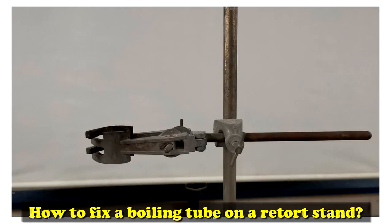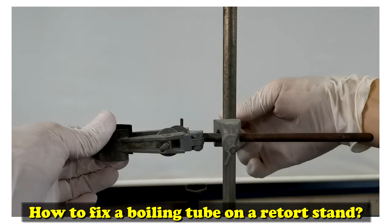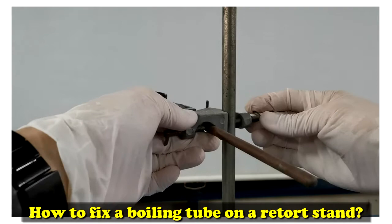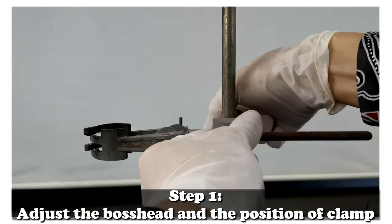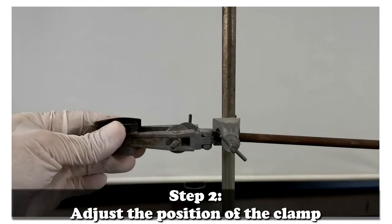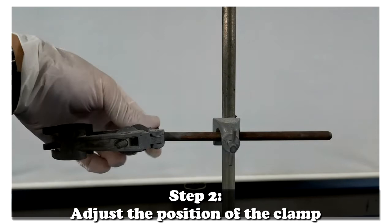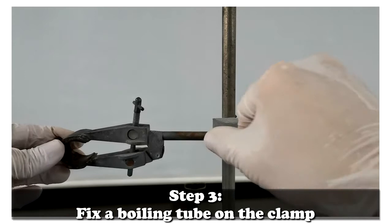How to fix a boiling tube on a retort stand? Step 1: Adjust the boss head and the position of the clamp. Step 2: Adjust the position of the clamp. Step 3: Fix a boiling tube on the clamp.